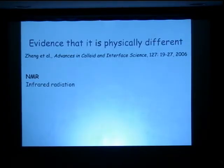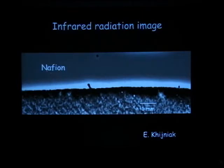In terms of infrared radiation, here's a piece of Nafion. The emissivity of the region right next to the Nafion, this dark region, is less than the emissivity of the bulk water beyond. It extends maybe for something like a third to a half a millimeter, suggesting that the molecules are more constrained and radiating less.